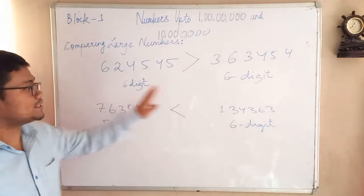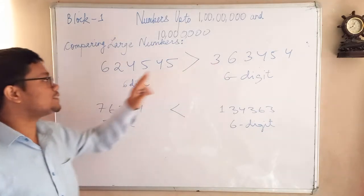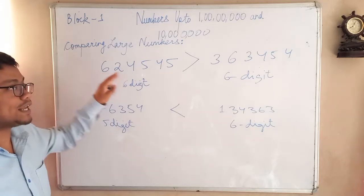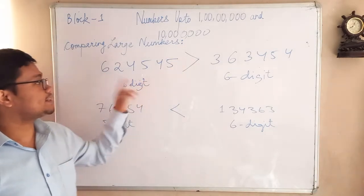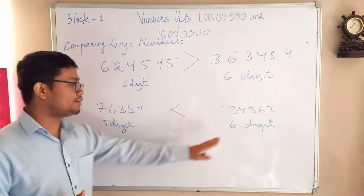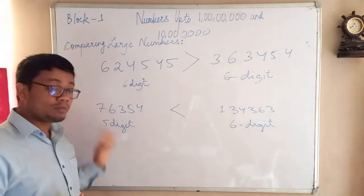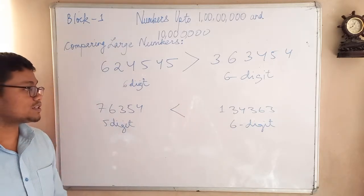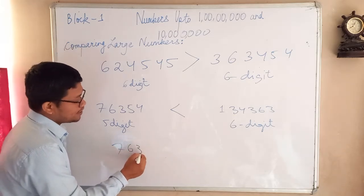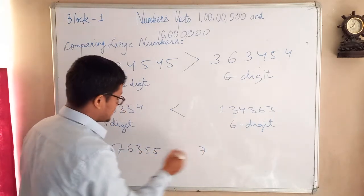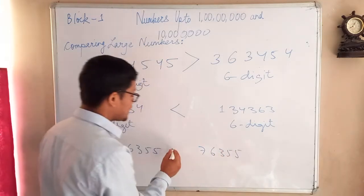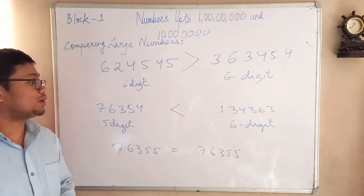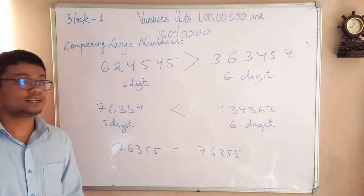So to summarize: when the same number of digits are given, you have to look at the first digit — the one with the bigger first digit is bigger. When we saw the first digit, six was saying six lakhs and three was saying three lakhs, so six lakhs is bigger. If the numbers have different digit counts, the one with more digits is bigger. And if both numbers are exactly the same — for example 76355 and 76355 — you give equals to, because they are equal.